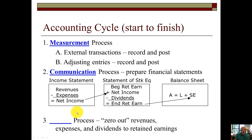After we're done communicating, we go through the closing process. This is where we zero out the revenues, expenses, and dividends to retained earnings. Remember the temporary accounts — T for temporary. Think of the acronym TREAD: T-R-E-D. Temporary is the T, and the types of temporaries are your revenues, expenses, and dividends. Like the tread of a tire gets reduced to zero over time, so do the temporary accounts get reduced to zero at the end of the accounting period.